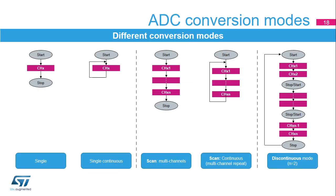The ADC supports several conversion modes. Single mode, which converts only one channel in single shot or continuous mode. Scan mode, which converts a complete set of predefined programmed input channels in single shot or continuous mode. And discontinuous mode, which converts a short sequence or subgroup of N conversions (N being less than or equal to 8) that is part of the sequence of conversions. When an external trigger occurs, it starts the next N conversion selected in the ADC-SQR registers until all the conversions in the sequence are done.